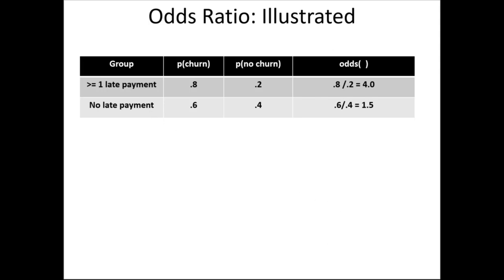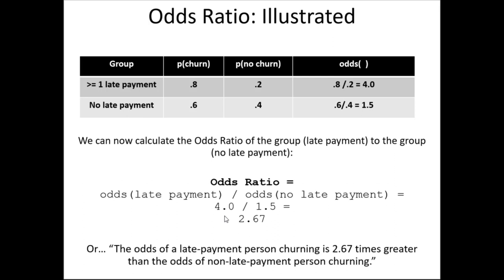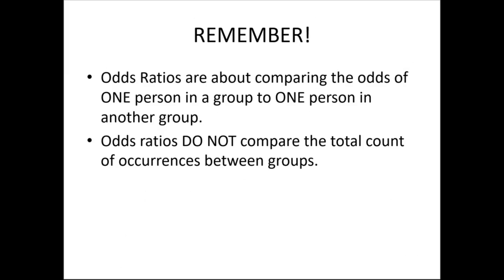The odds ratio is simply the ratio of these two odds: 4.0 divided by 1.5 equals 2.67. We interpret this as: the odds of a late-payment customer churning are 2.67 times greater than the odds of a non-late-payment customer churning. Remember, odds ratios compare the odds of one person in a group to one person in another group — not total counts or total occurrences between groups.